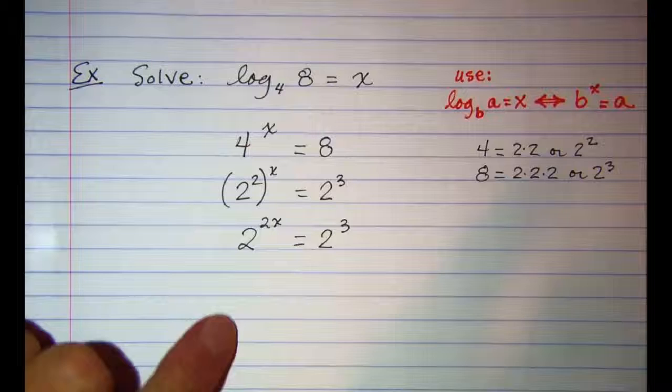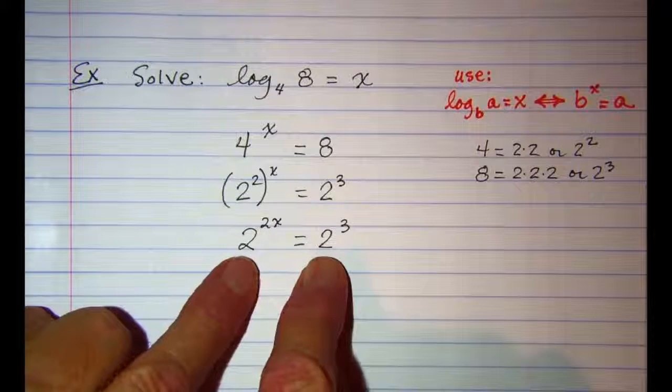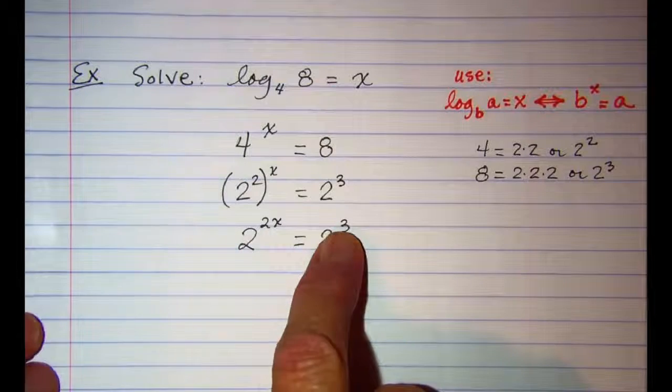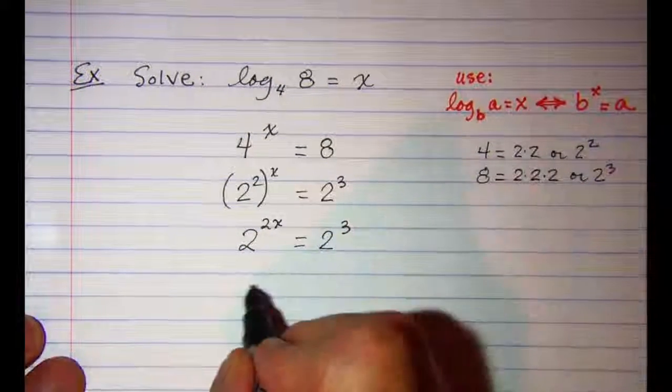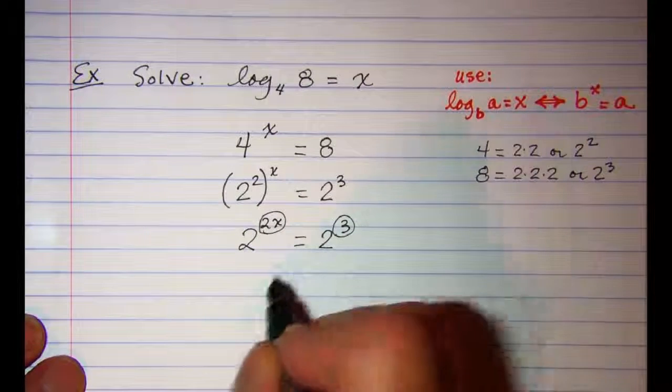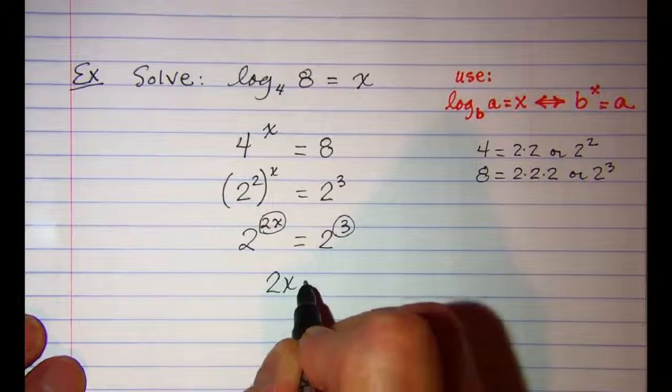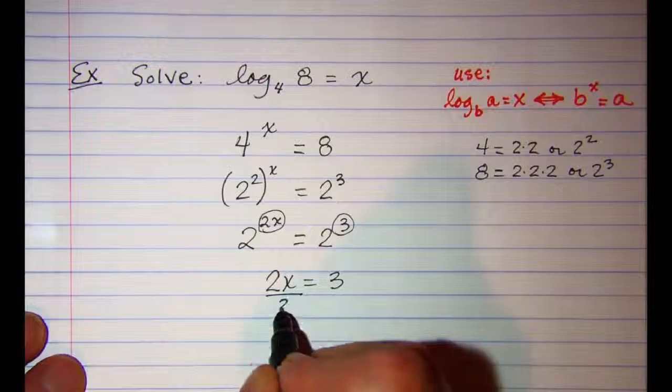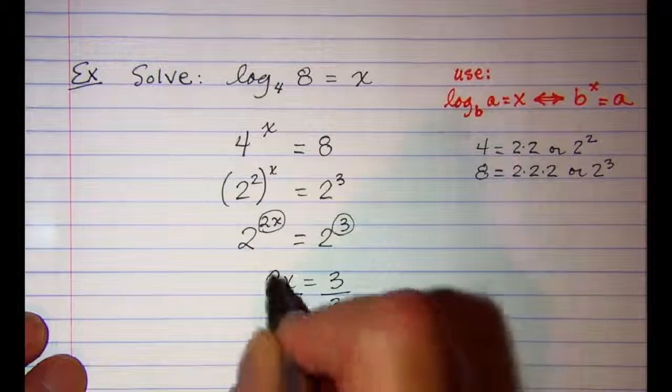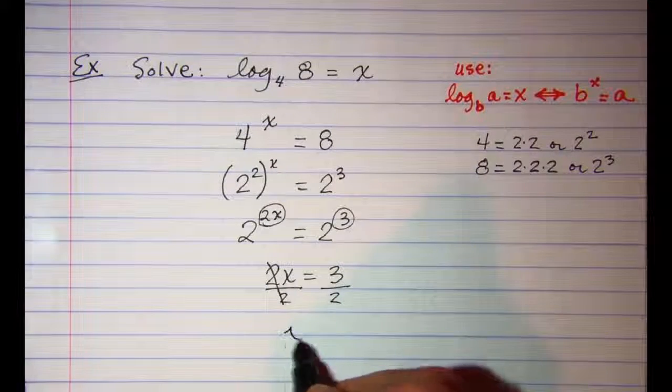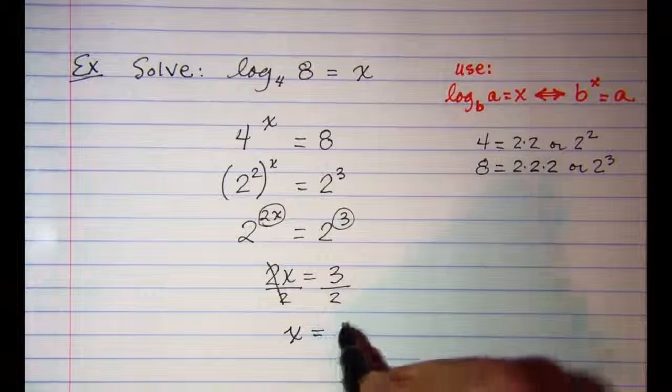Now whenever you have two expressions that are equal and the bases are equal, then the exponents have to be equal. So I know that this exponent is equal to this exponent. 2x equals 3. Divide both sides by 2, and x equals 3 halves.